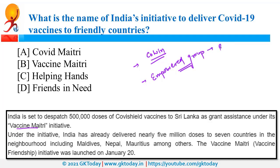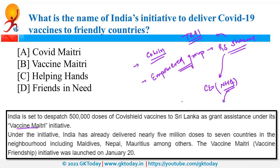This empowered group is headed by Ram Sevak Sharma, who is the former Chairperson of TRAI, that is the Telecom Regulatory Authority of India. He has been appointed as the next CEO of NHA — the National Health Authority. NHA is the implementing authority of the Ayushman Bharat Health Scheme.